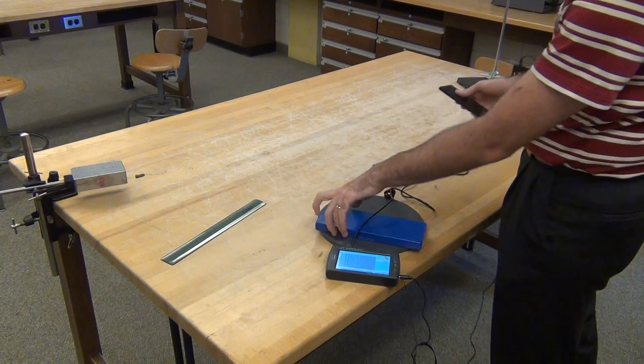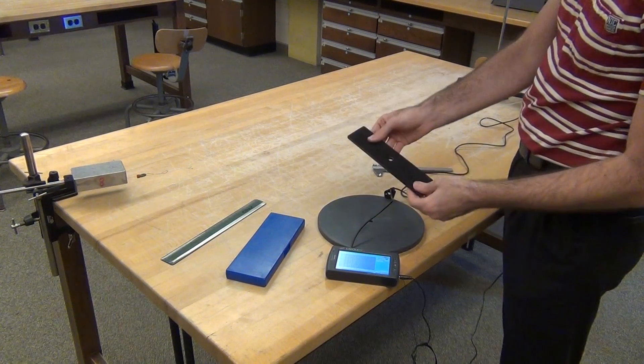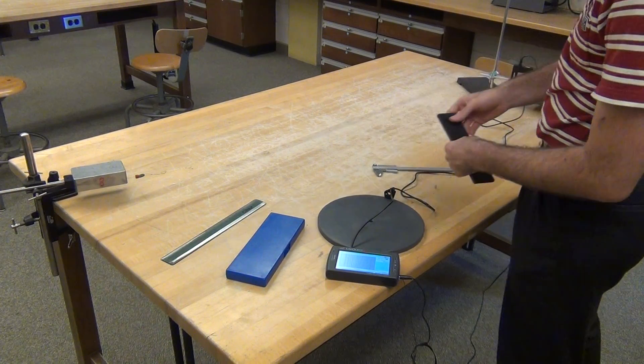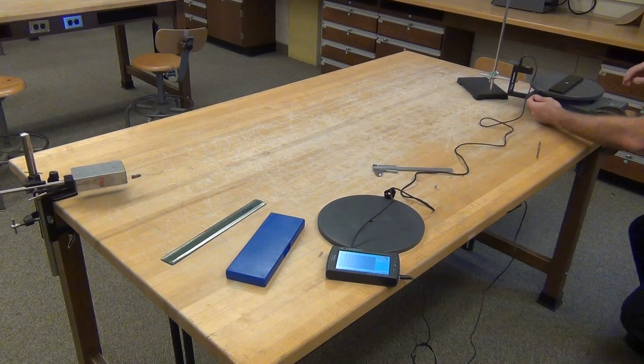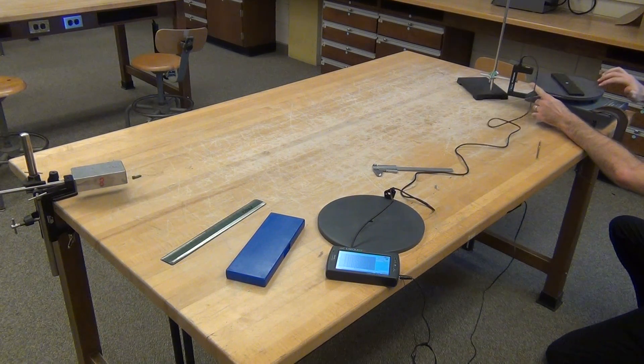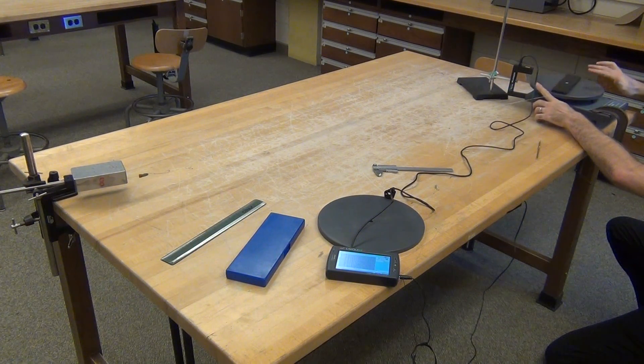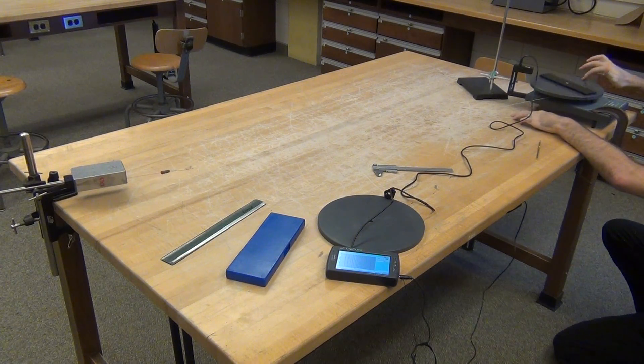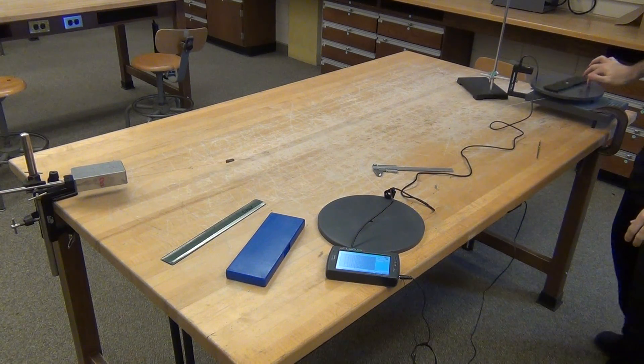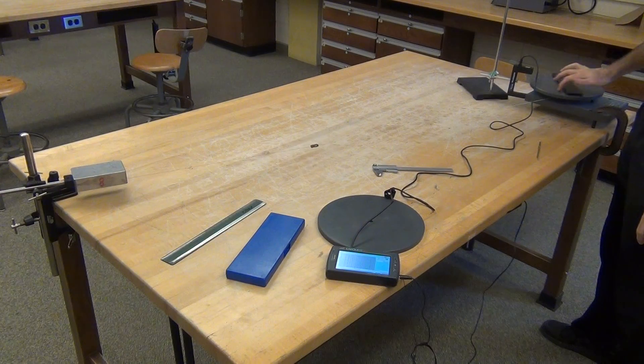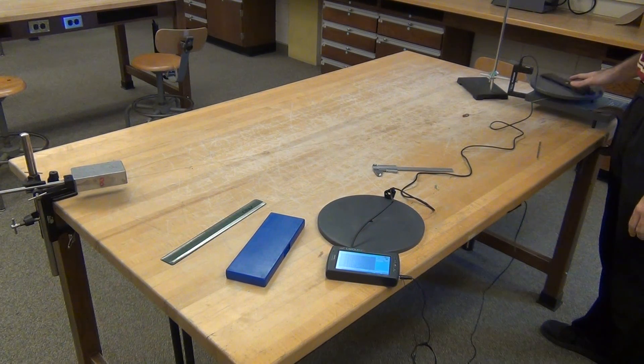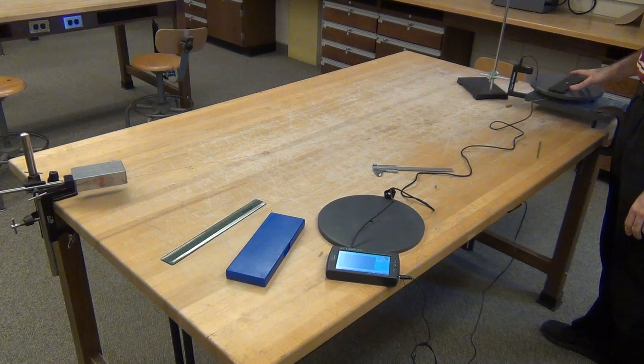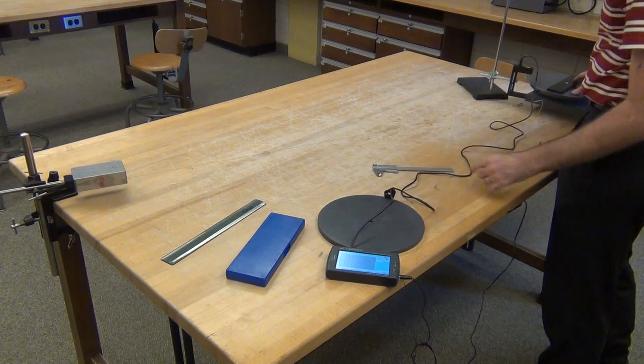Then you'll take the two objects and do two more runs per person, where you put the object on top, wind the string around the medium-sized spool, and then starting from rest, start your data.